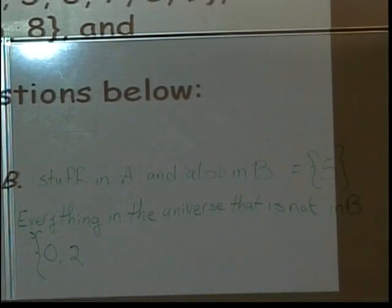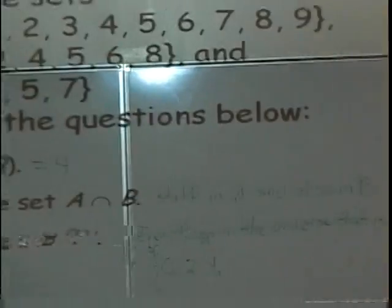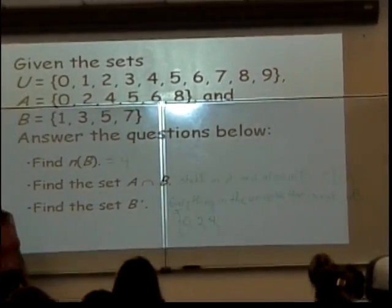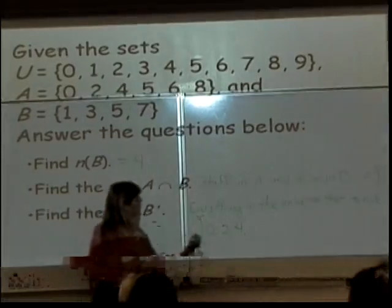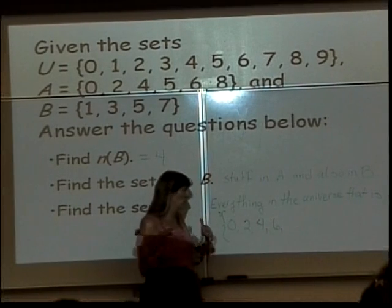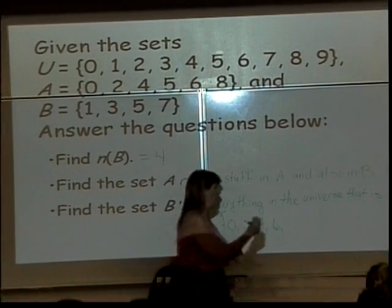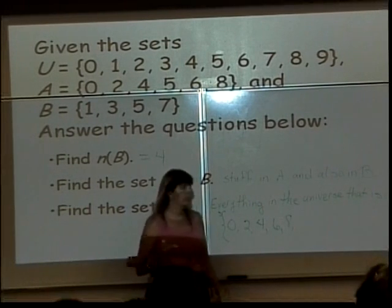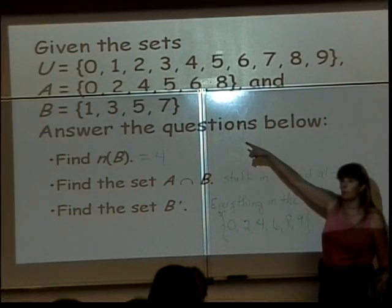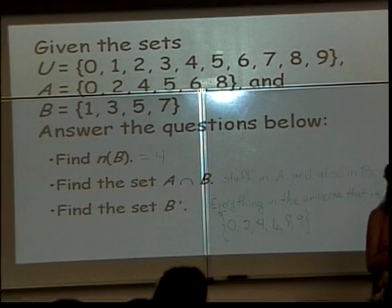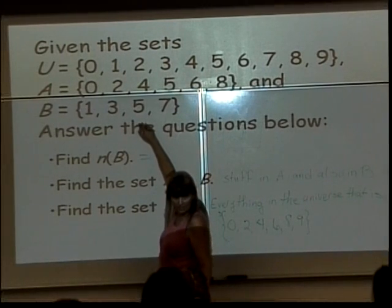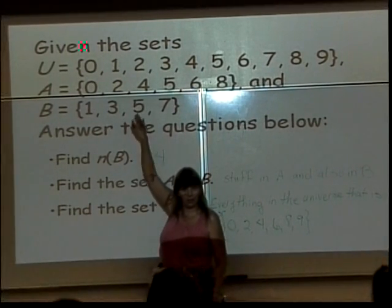The universe has a six. I get to keep it because B doesn't have one. The universe has a seven. Out of there. The universe has an eight. I get to keep it. The universe has a nine. Keep. One of the things I want to point out, if you were to put B complement together with B and write them all down, what would you have? The universe. This is part of it. These are all the other things in it. But these two have nothing overlapping at all.